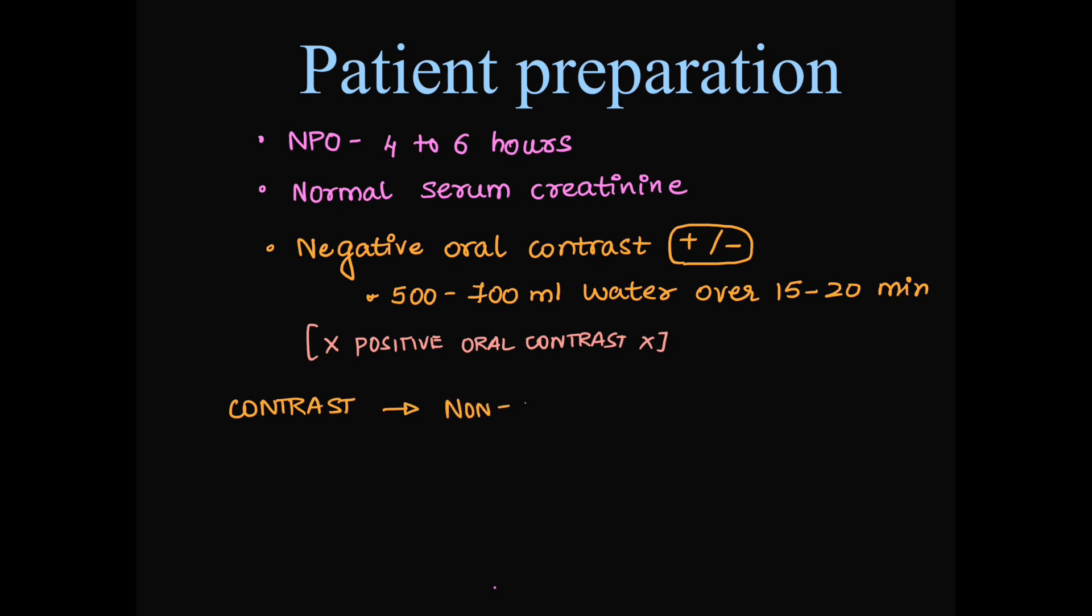Next, what contrast we use for the CECT or multiphasic CT? We use a non-ionic dye, 300 mg iodine per ml concentration. And quantity what we use is approximately 100 to 120 ml and we give it at the rate of 3 to 4 ml per second.